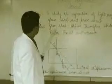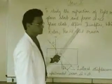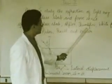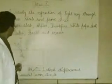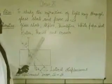We need a glass slab, paper pins, thumb pins, white paper sheet, ruler, pencil, and an eraser.